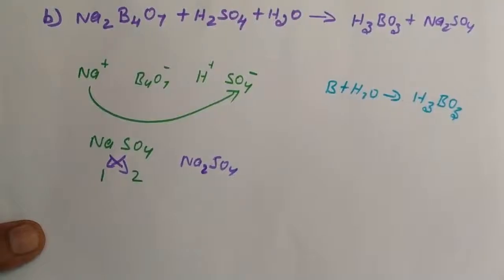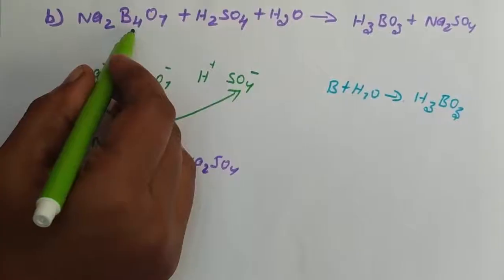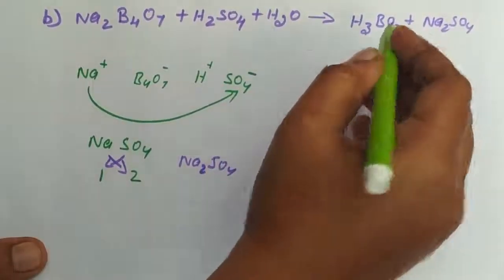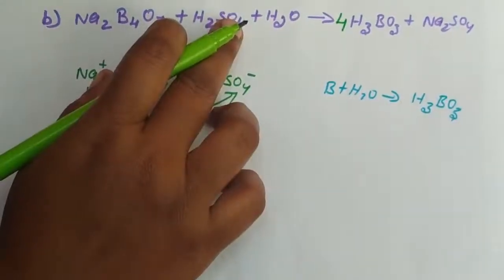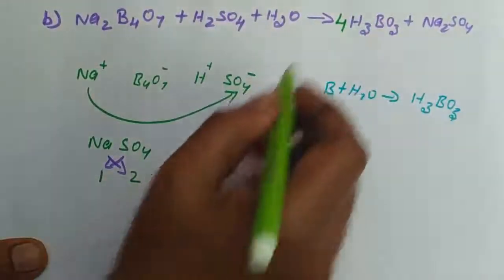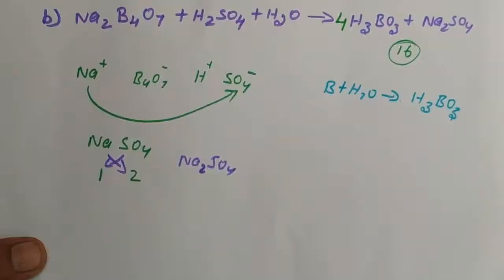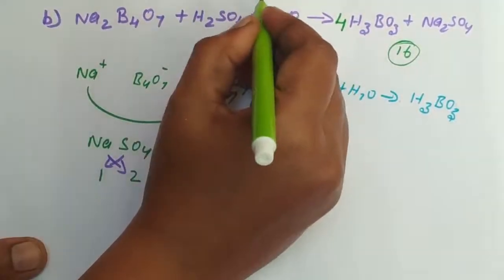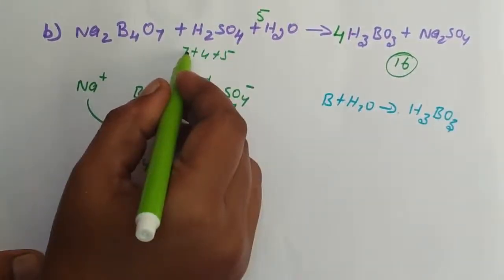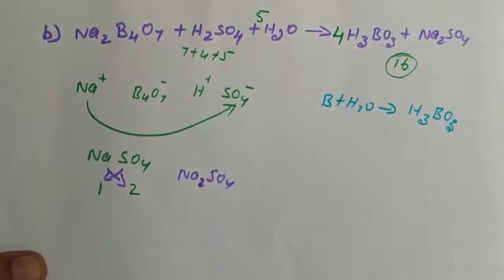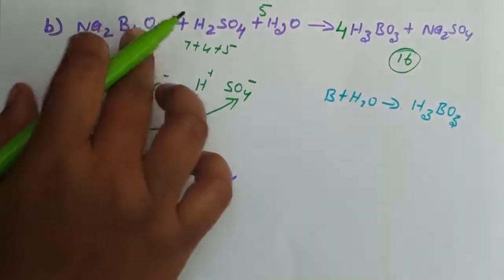Now balance the reaction. Na2 is balanced on both sides. Boron 4 on the left must equal boron on the right. Checking oxygen: 7 plus 4 is 11, and 11 plus 5 is 16, giving 16 oxygens balanced. The second reaction — Na2B4O7 plus sulfuric acid — is now balanced.